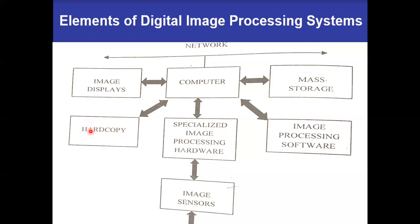The last output component is hard copy devices, which are used for recording images. These include laser printers, film cameras, heat sensitive devices, inkjet units, and digital units like optical CD-ROM disks. Even though the highest resolution is provided by camera film, the written material preferred is paper.